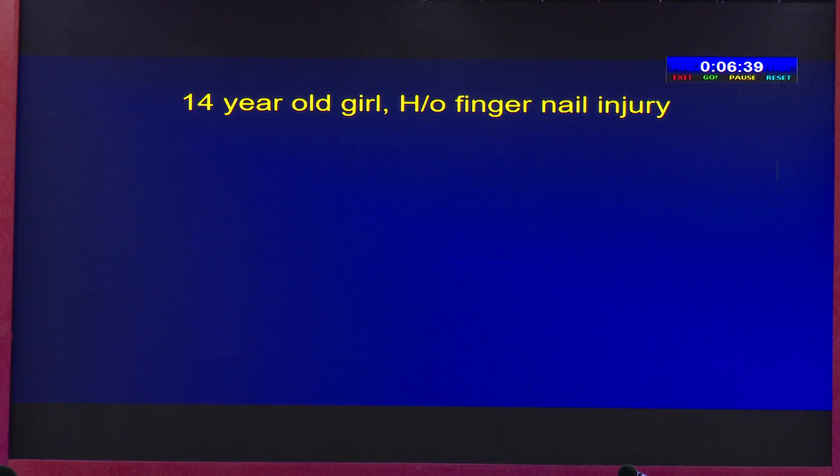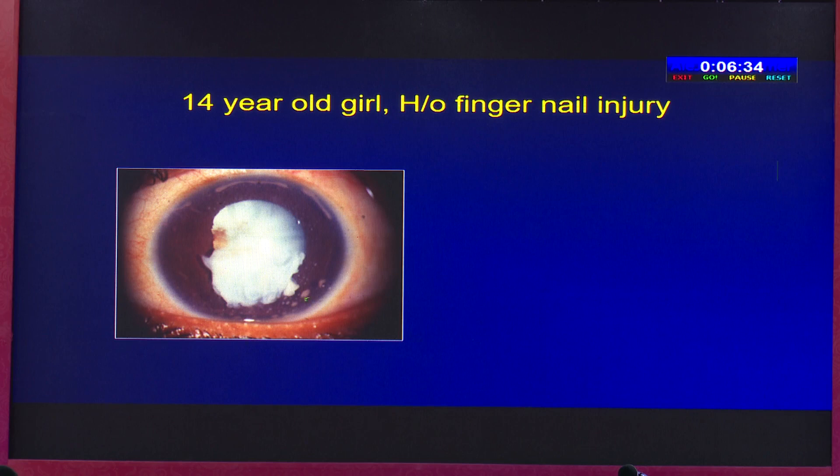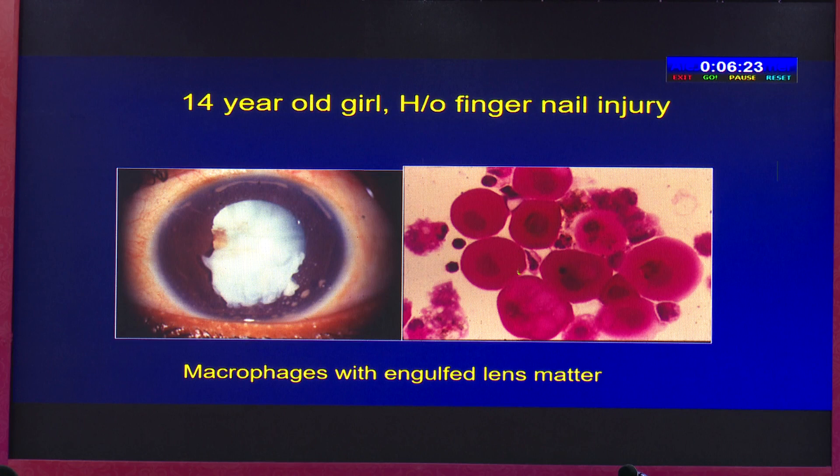This is a 14-year-old girl with a history of fingernail injury. You can see the granulomatous KPs and the total complicated cataract. What could be the etiology? You can do an anterior chamber TAP and it can show macrophages with engulfed lens matter, suggestive of lens-induced uveitis.